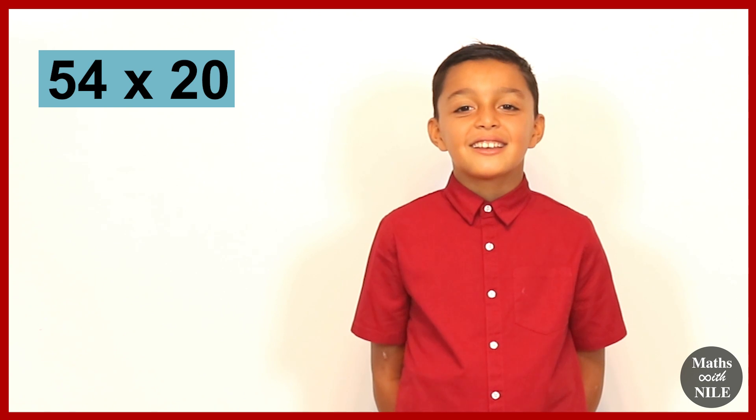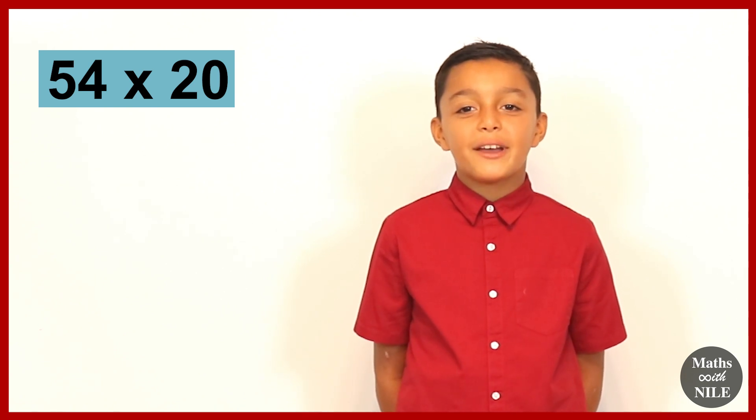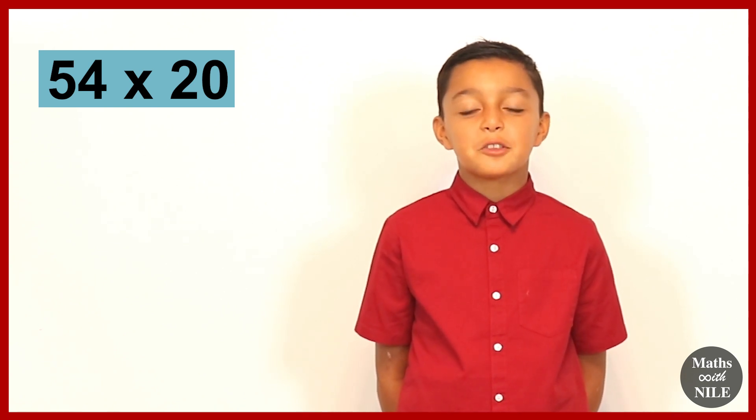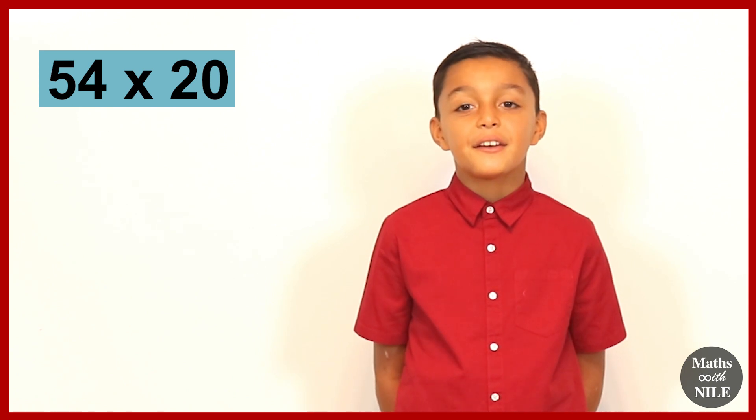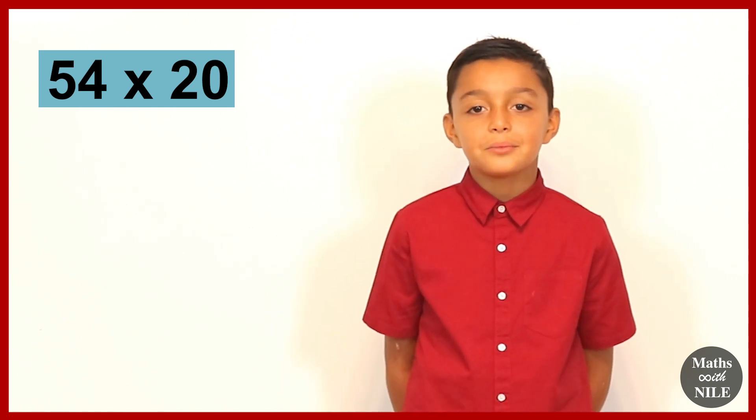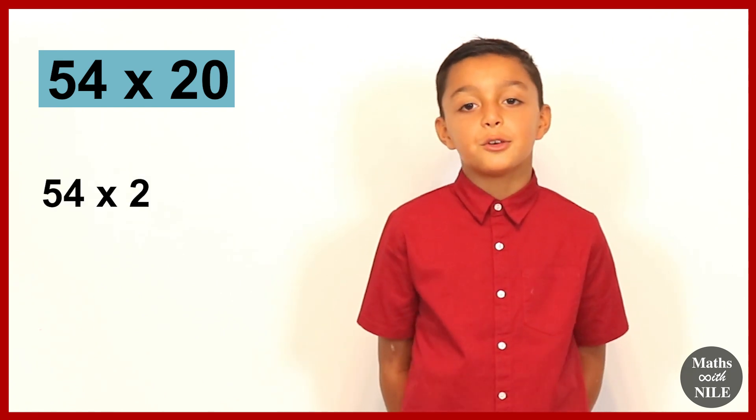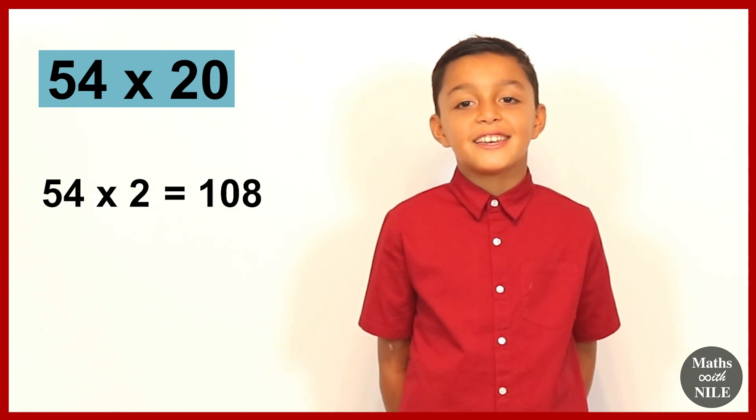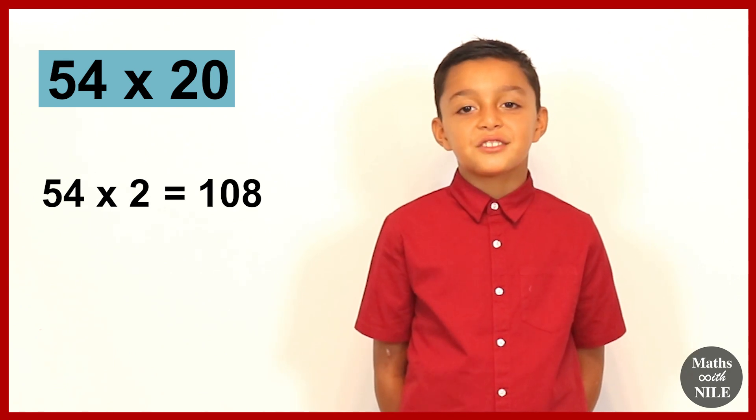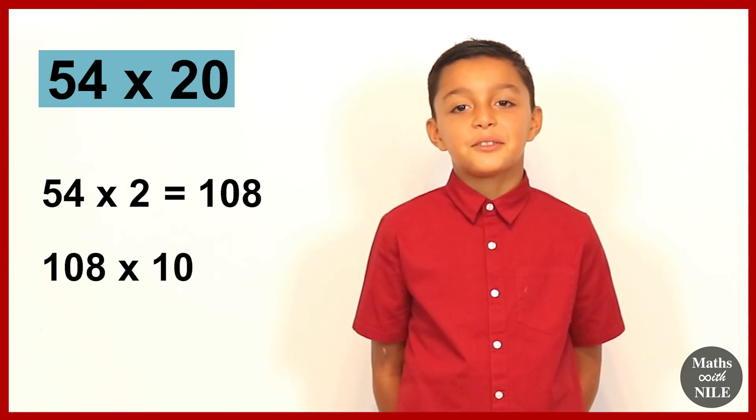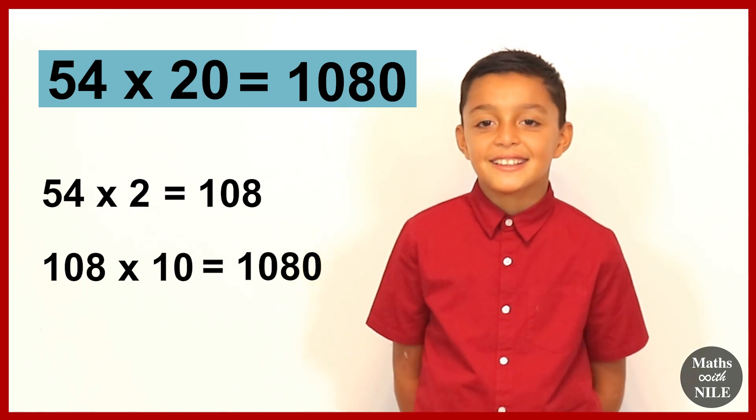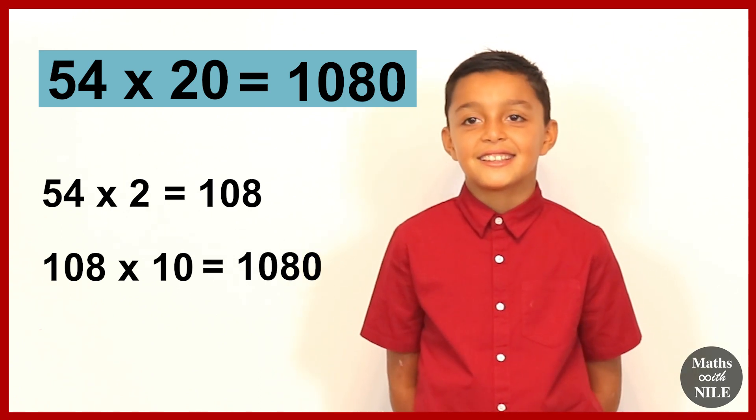Let's look at question number 18, Niall. It says 54 times 20. So I'm going to do it a different way now. I'm going to do 54 times 2 and then by 10. Yes, because you can do it in any order. So go ahead. So 54 times 2 is 108. And then 108 times 10 is 1080. 108 times 10 is 1080. Very good, Niall.